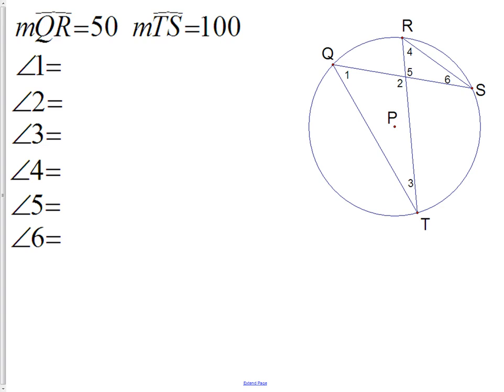Last example. Here we have that QR is 50 and TS is 100. Those are both arcs. So the arc from Q to R is 50. The arc from T to S is 100. We want to find the measurement of all of the rest of the angles in the circle. The first angle seems pretty easy to me to start with is angle 1. As I look at angle 1, I notice that it opens up to the arc, which is the measurement of 100. That means angle 1 has to be half of that, or 50.